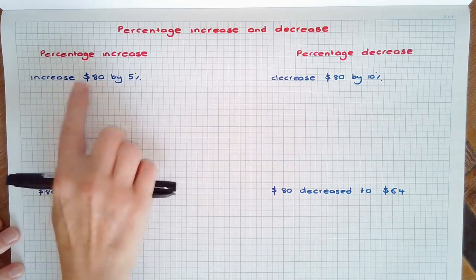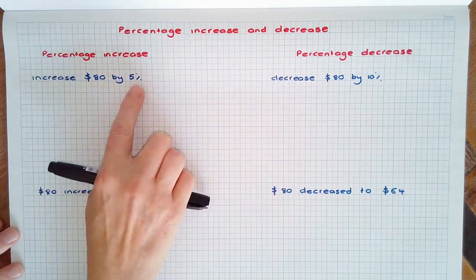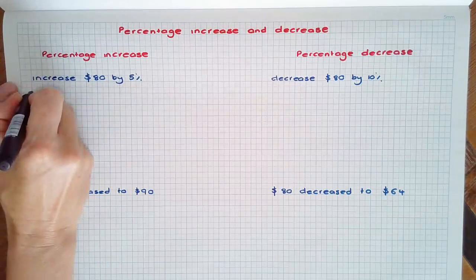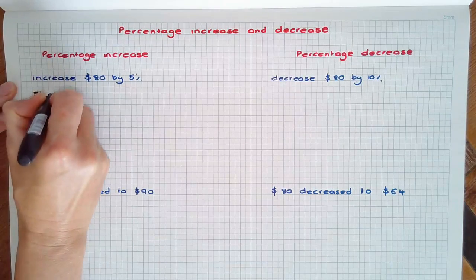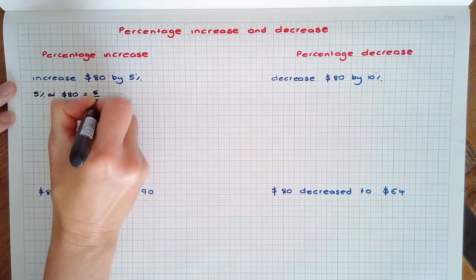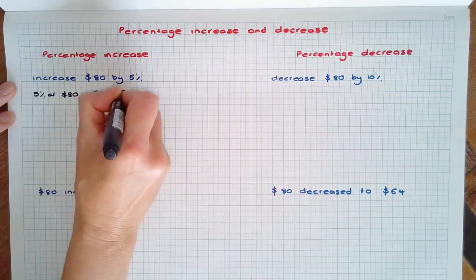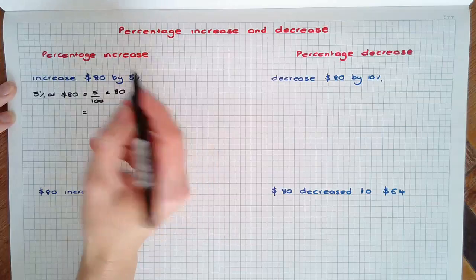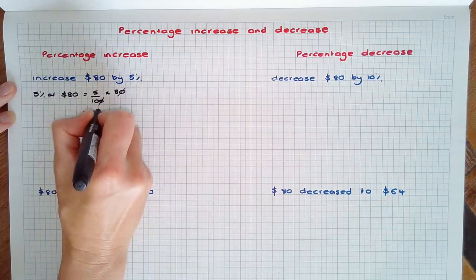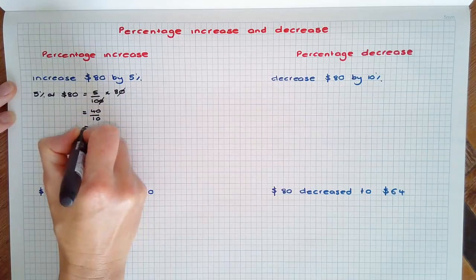Such as increasing $80 by 5%. First of all we need to find 5% of $80. 5% is 5 over 100 times 80, and using some cancelling dividing by a common factor of 10 we have 40 over 10 which is $4.